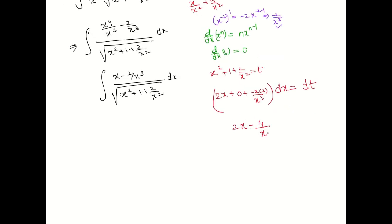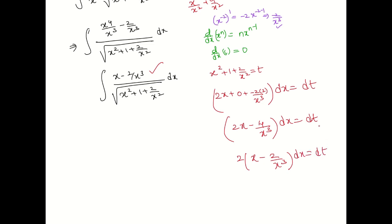So dt = (2x - 4/x³) dx. Taking 2 common from the numerator: 2(x - 2/x³) dx = dt. Dividing both sides by 2, we get (x - 2/x³) dx = dt/2.